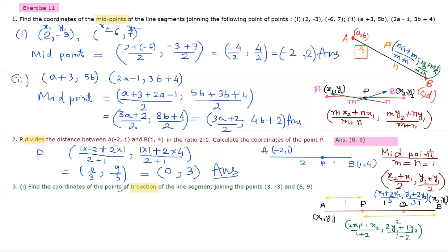Now find the points of trisection. Points of trisection means there will be two points to find. One divides AB in the ratio 1:2 and the other divides in ratio 2:1. Draw the diagram: this is A with coordinate (3, -3) and B is (6, 9). Let the first point be P. P divides AB in ratio 1:2, same logic as above — 2 will be multiplied with B's coordinate and 1 with A's coordinate.